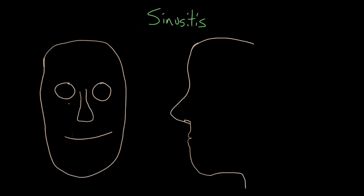Here I've drawn a couple of faces, and we're going to superimpose the sinuses on these faces. The largest sinuses in your face are called the maxillary sinuses, and they live on the side of your nose, right underneath your eye. If you tap on that bone right underneath your eye — your cheekbone — you're tapping on the frontal wall of the maxillary sinus. When looking at somebody from the front, the maxillary sinuses from the side are located about right here.